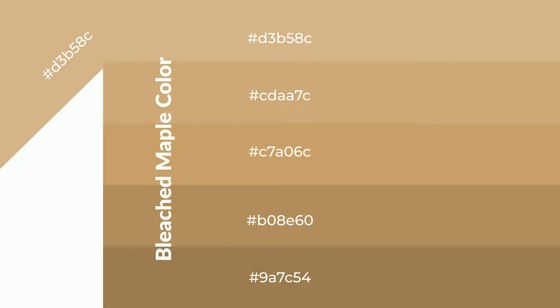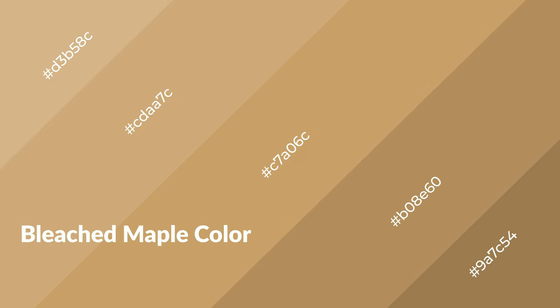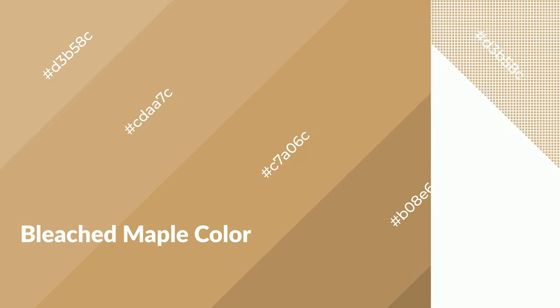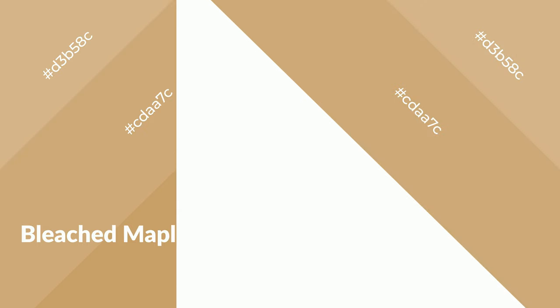Shades are used in patterns, 3D effects, and layers, and shades create depth and drama. Bleached maple is a warm color and it emits cozier and active emotion. Warm colors are symbols of warmth, fire, heat, and sunshine.